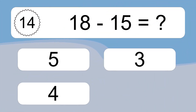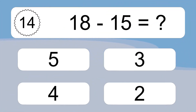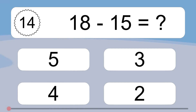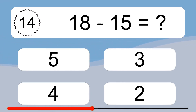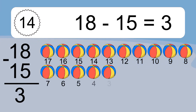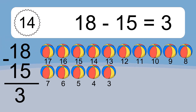18 minus 15 equals what? 18 minus 15 equals 3. Let's count it: 17, 16, 15, 14, 13, 12, 11, 10, 9, 8, 7, 6, 5, 4, 3.